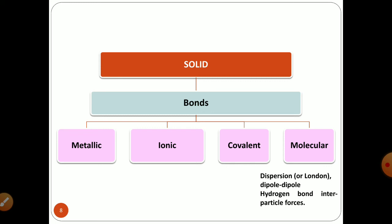Molecular crystalline solids are composed of molecules held together by dispersion forces, also known as London forces. Along with London forces, you will observe dipole-dipole interactions and hydrogen bonding as inter-particle forces. These are all intermolecular forces and are considerably weaker than intramolecular forces such as ionic bonds. As the intermolecular forces are considerably weaker, molecular crystalline solids are fairly soft, having low to moderate melting points, and are poor electrical and thermal conductors.